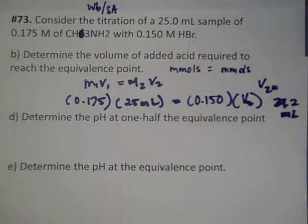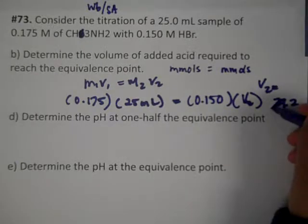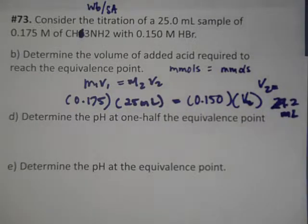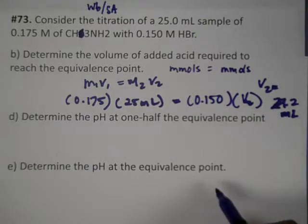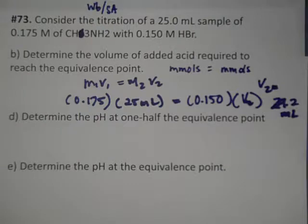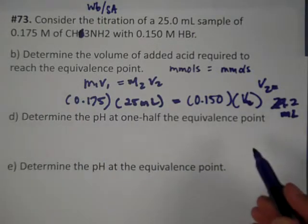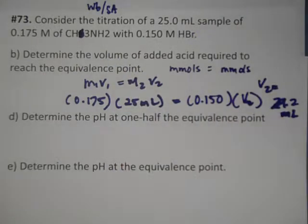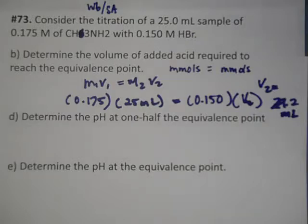Next we're going to determine the pH at half the equivalence point. Remember, this is not a strong acid–strong base problem, so a pH of seven is never going to be involved. The pH at half the equivalence point for a weak base–strong acid problem is simply going to be the pKa of the conjugate acid.